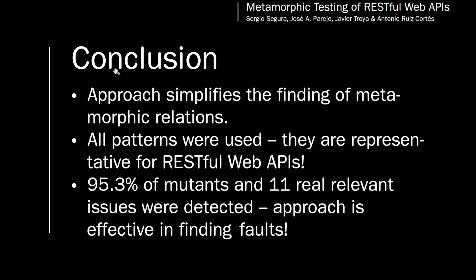The evaluation with seeded faults resulted in 95.3% of mutations detected, supporting the effectiveness of the approach in revealing faults. The real issues found in Spotify and YouTube's APIs are relevant both in terms of quality and quantity. Ten of the issues have been confirmed either by developers or users, meaning they are meaningful, and the fact that some of them were fixed quickly supports their relevance.